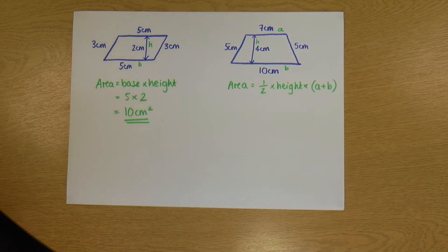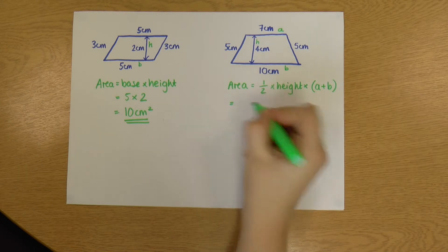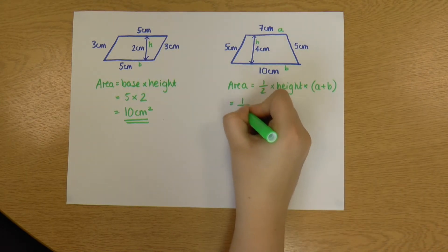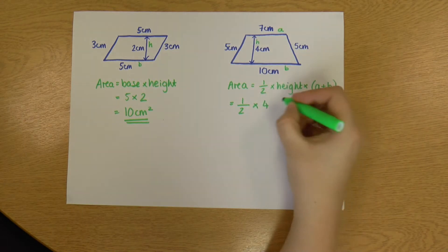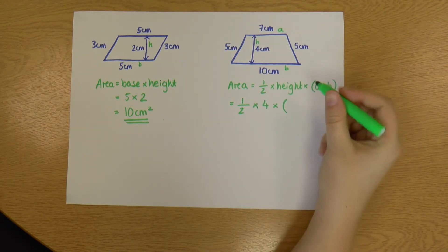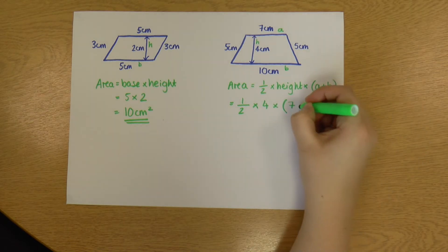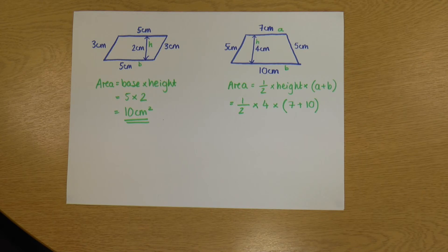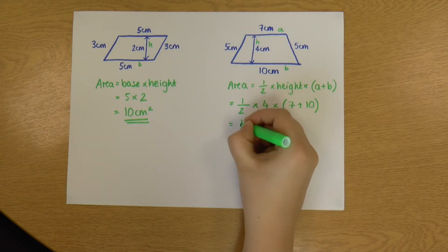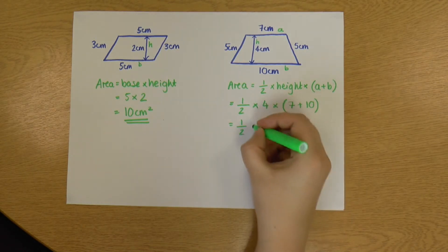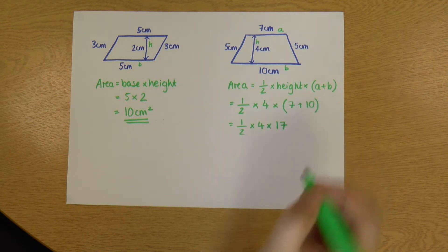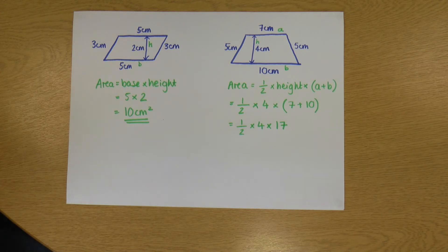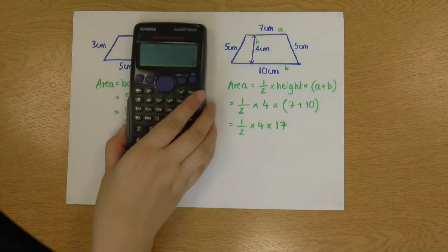Then we just plug the numbers into the equation. My area is half times my height of 4 times a plus b. a is 7, b is 10. I'm going to rewrite it with the numbers: half times 4 times 7 plus 10, which is 17. Now we've got something we can pop into a calculator.